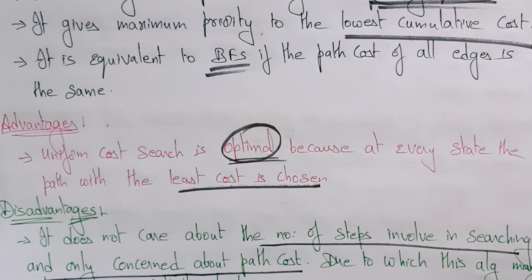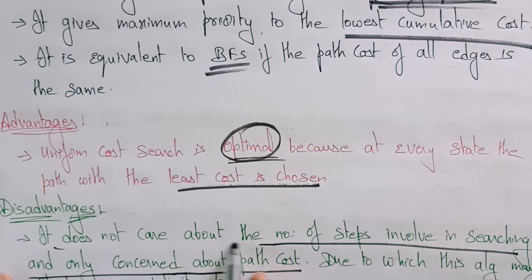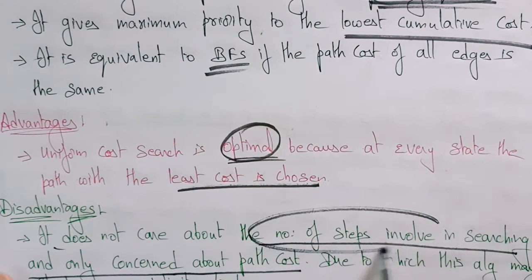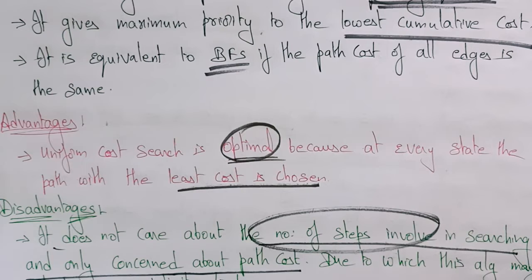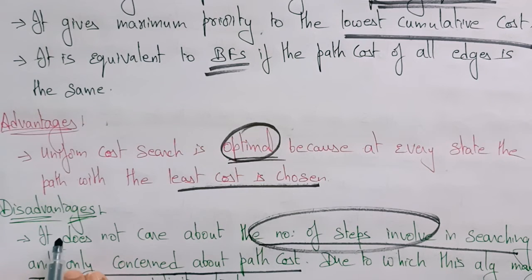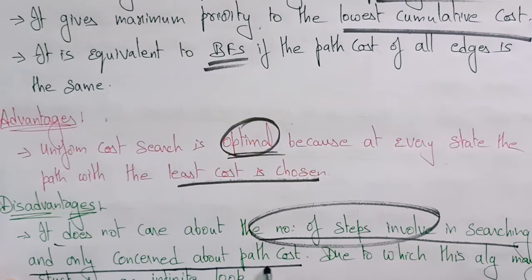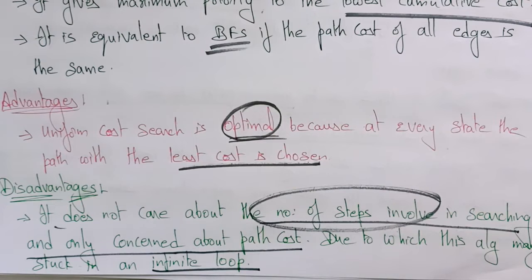The main disadvantage is that it does not care about the number of steps involved — you visit each and every shop to find out the item cost. In the same way, Uniform Cost Search does not care about the number of steps and only focuses on path cost. Due to this, the algorithm may get stuck in an infinite loop, just like Depth First Search.